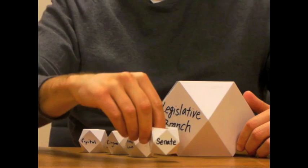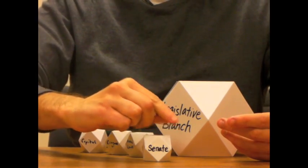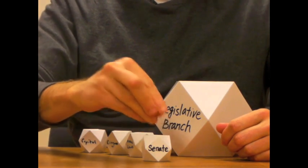They can also break these parts into smaller parts. For example, voting, procedures, 100 members, six-year terms.